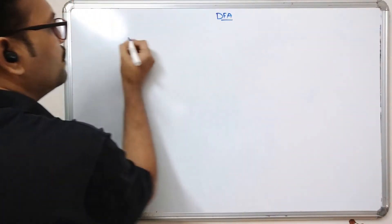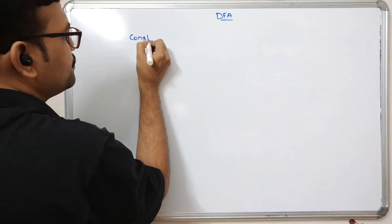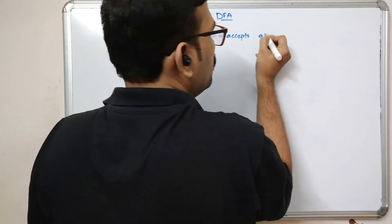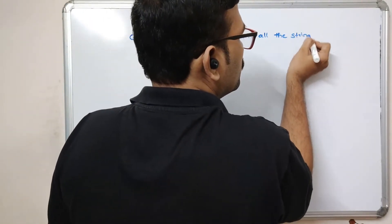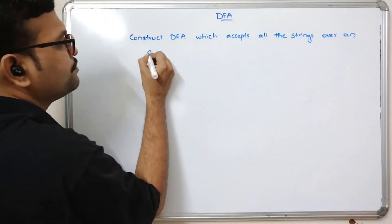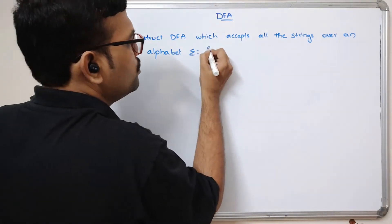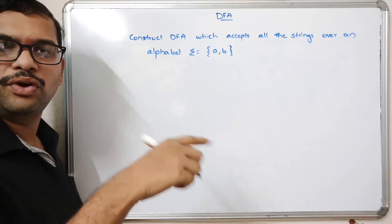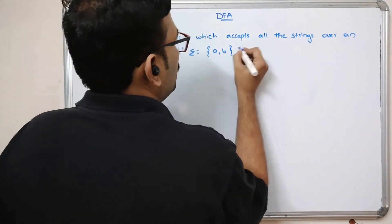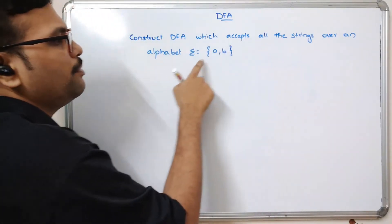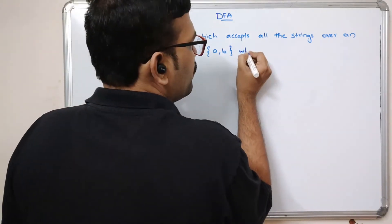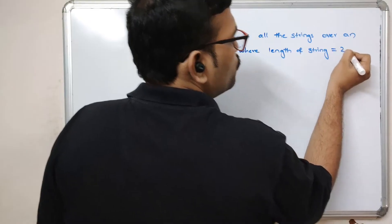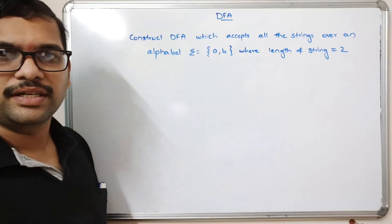Let's write down the statement: construct a DFA which accepts all strings over an alphabet sigma equal to {a, b}. We use a and b since previous sessions used zero and one. The constraint is that the length of a string is exactly two.